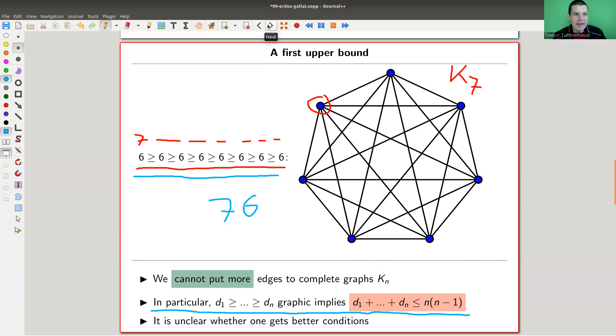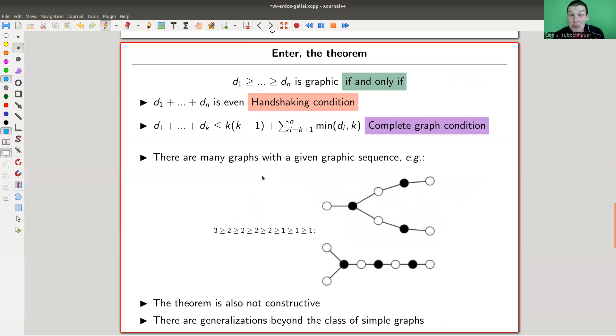And here kicks in the theorem, which is an if and only if condition, which basically says the complete graph condition. And that's the one from the last slide, in a little bit more fancy version, is kind of enough. So let me explain. So a sequence is graphic, if and only if the following happens, there's a handshaking condition, which I will explain on the next slide. It's just saying that the sum is even, we'll see on the next slide why we want that.